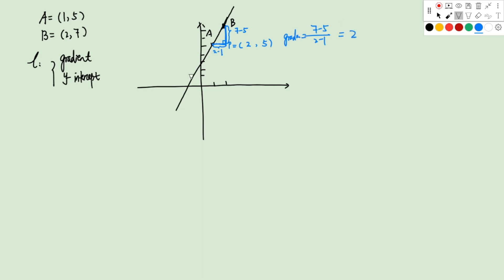After finding the gradient, we have Y equals to 2X plus H. Because A is on this line, we can plug in its coordinates: 5 equals to 2 times 1 plus H, so H equals to 3. Therefore the Y intercept will be (0, 3) and the gradient is 2.